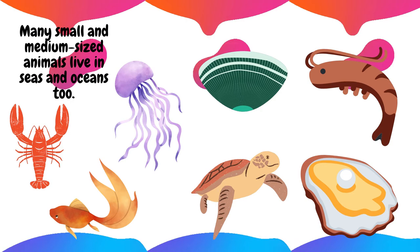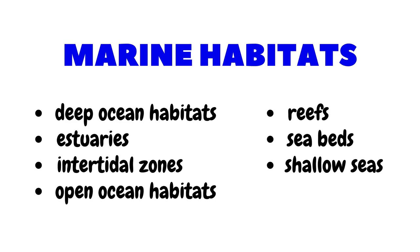A wide range of marine fishes, jellyfishes, sea turtles, clams, oysters, lobsters, shrimps, and even microscopic planktons live in saltwater habitats. Marine habitats include deep ocean habitats, estuaries, intertidal zones, open ocean habitats, reefs, sea beds, and shallow seas.